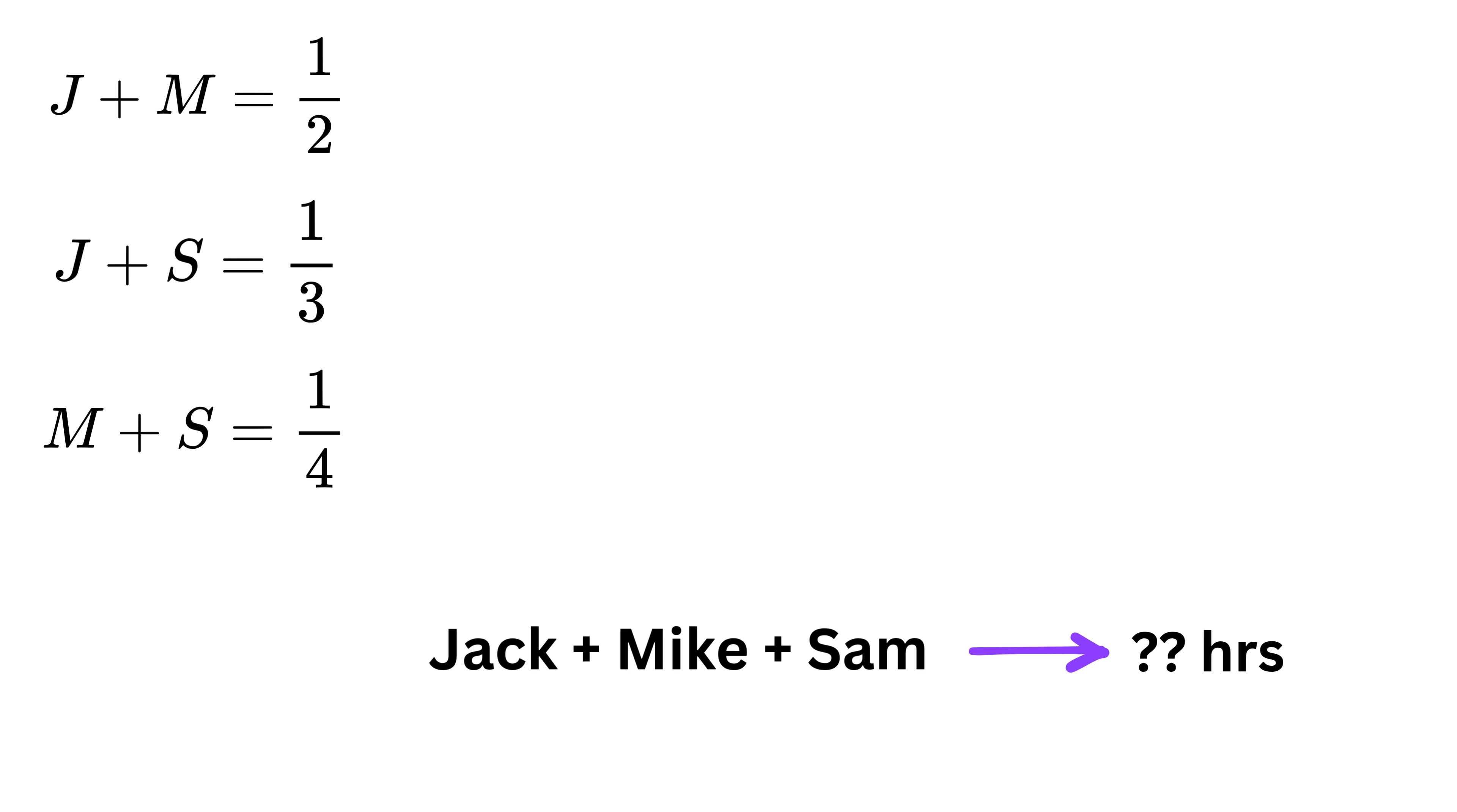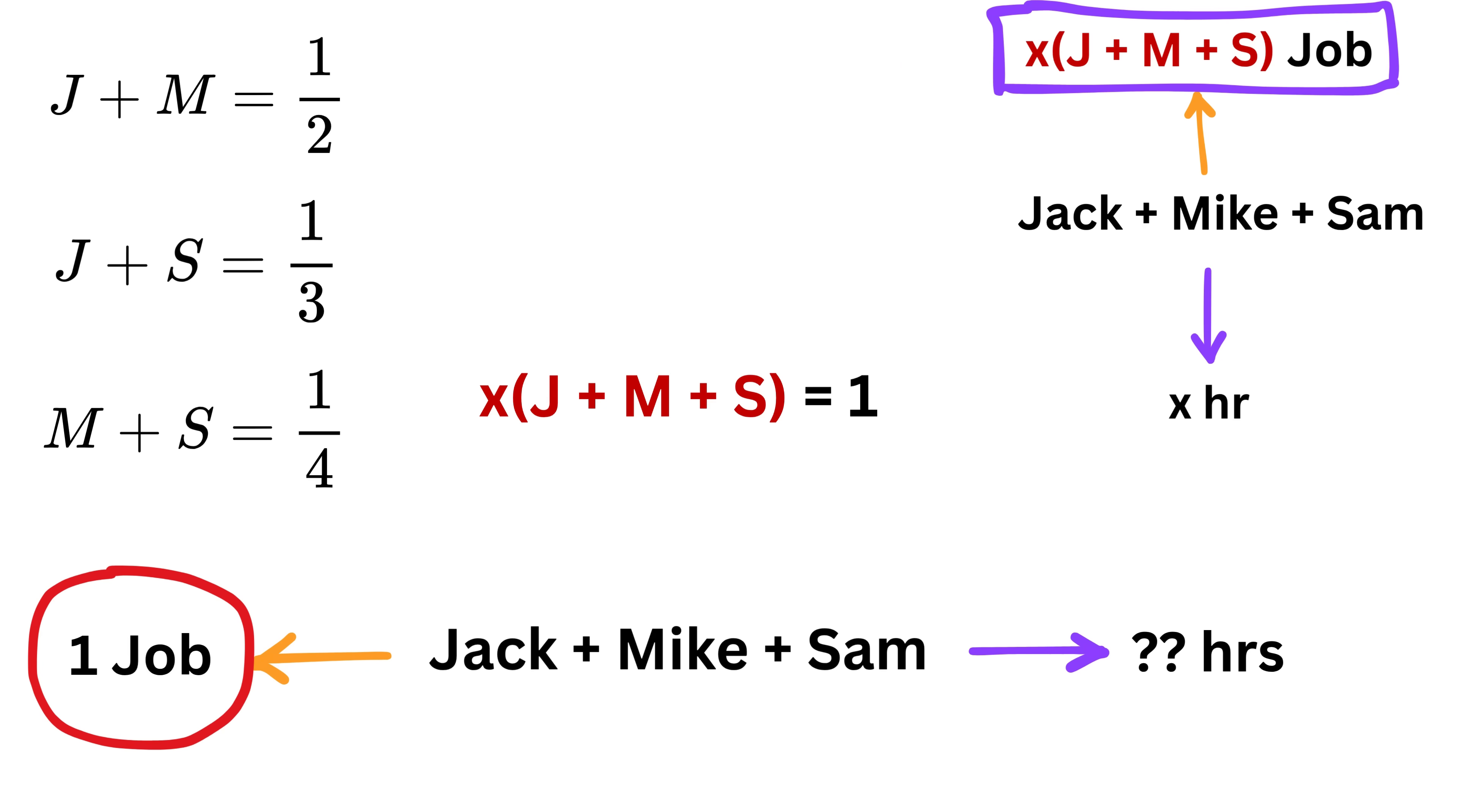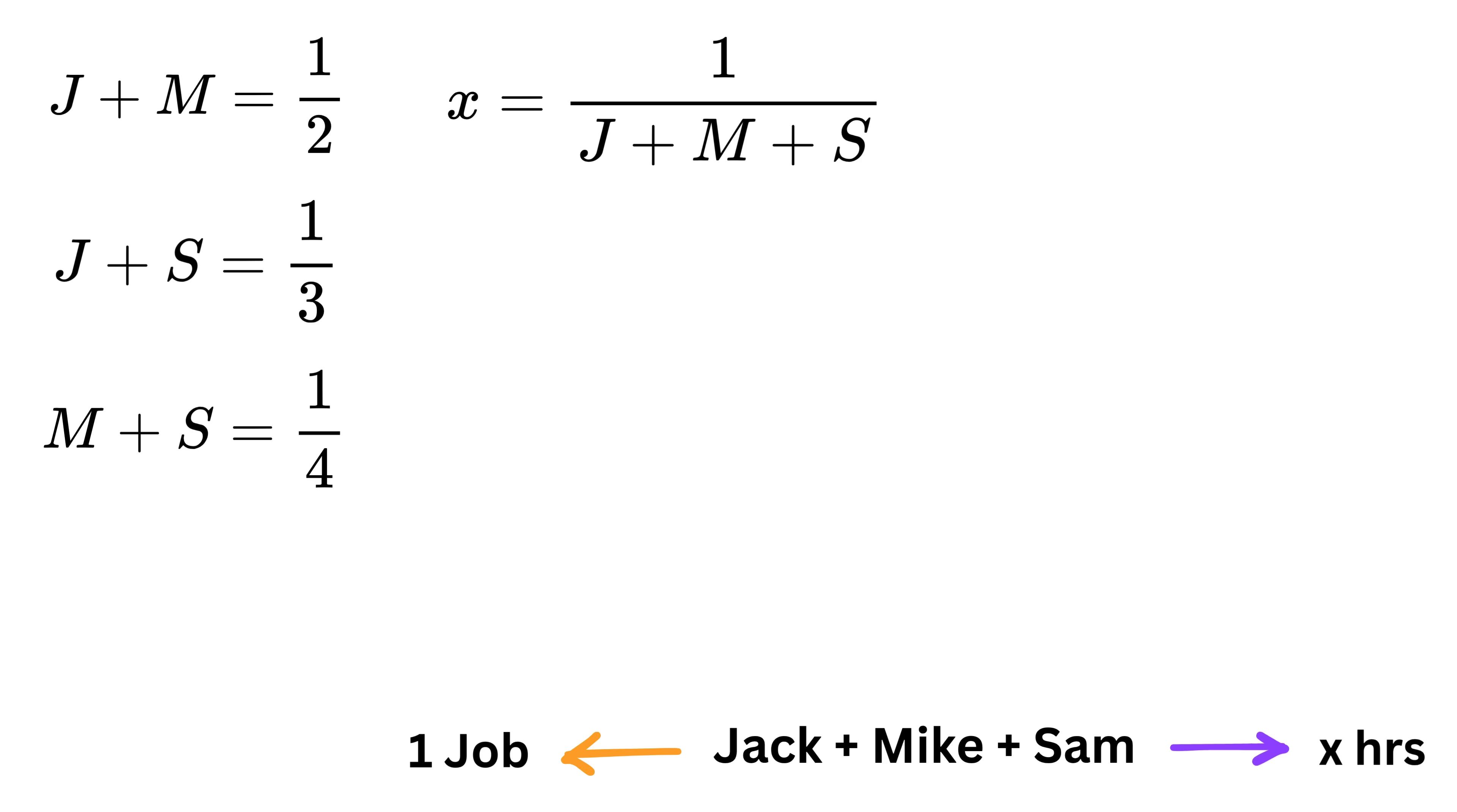The question now asks, how long will it take for all three, Jack, Mike, and Sam, working together to finish one full job? When all three work together, their combined work done in one hour will be J plus M plus S. If they keep working hour by hour, then in X hours, they will complete X times that combined work. Since they have to finish one full job, we can say X times the sum of J, M, and S equals one full job. From this, we can think that X equals one divided by the sum of J plus M plus S. So the main task now is to find what the value of J plus M plus S is. Once we know that, we can easily find X, the time it takes for all three together.